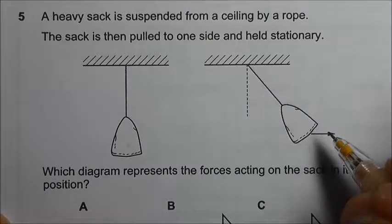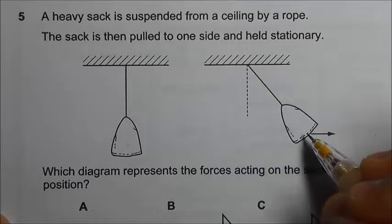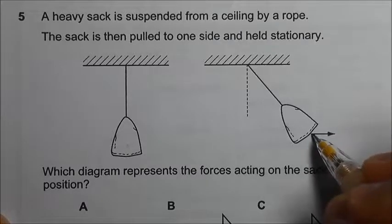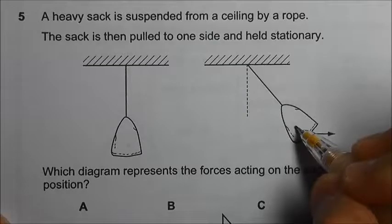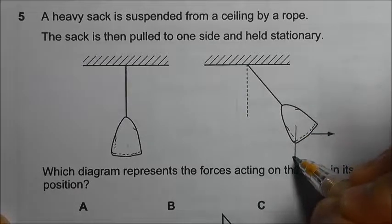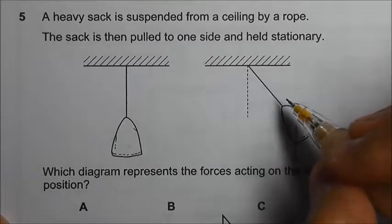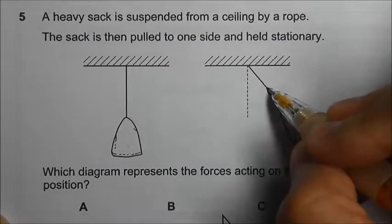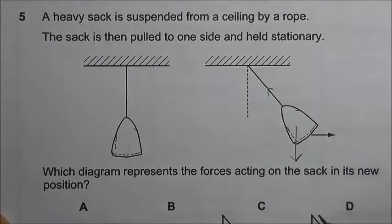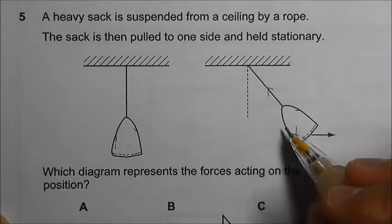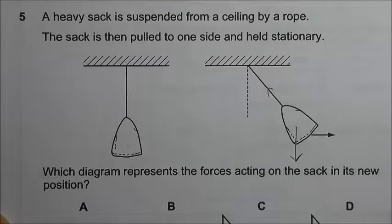We have one force here, we also have the weight of the sack as a downward force, and the tension of the rope that is going in this direction. Since it is in equilibrium, all the three forces when we line them up using the tip to tail method, they should form a closed triangle.